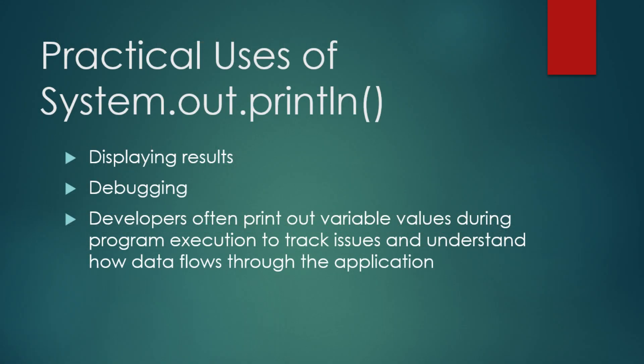Finally, let's talk about why System.out.println is such an important tool for developers. Printing isn't just about showing results — it's also a critical part of debugging. When you're working on complex programs, you'll often print variable values or intermediate results to the console to see how your program is behaving. This can help you identify bugs and ensure that your code is functioning as expected. For example, if you're writing a program that calculates the sum of a list of numbers but not getting the expected result, you can add print statements throughout your code to display the current value of the sum at different points in the calculation. This will help you trace the flow of your program and identify where things are going wrong.